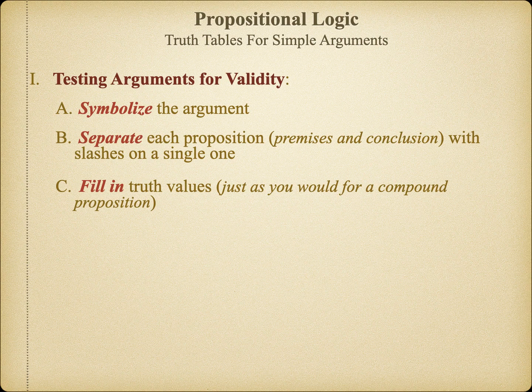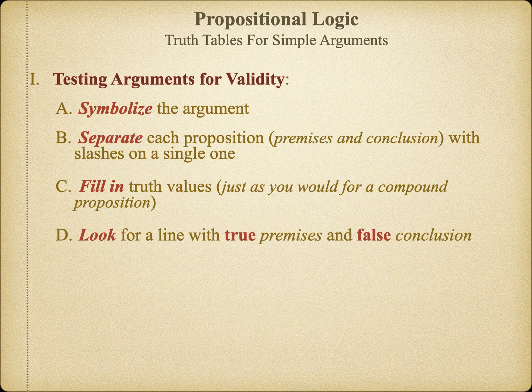There are many different ways an argument might achieve validity, and equally many ways it might fail. Fortunately, there is one case in which we always know if an argument is invalid: when the premises are true, but the conclusion is false. The premises of a deductive argument are supposed to provide sufficient conditions for the conclusion to follow. So, just like in a hypothetical statement, if the antecedent is true but the consequent is false, we know something has gone wrong. So if there is any line on the truth table where the premises are true but the conclusion is false, we know for certain that the argument is invalid.